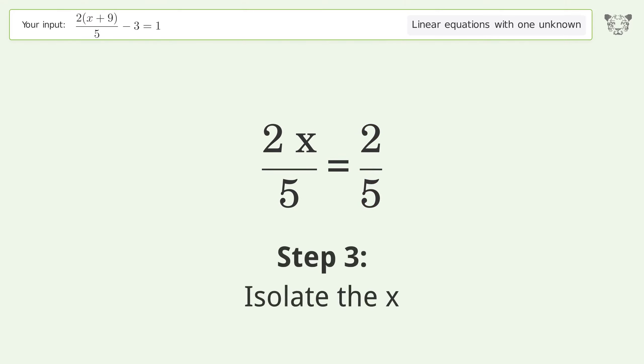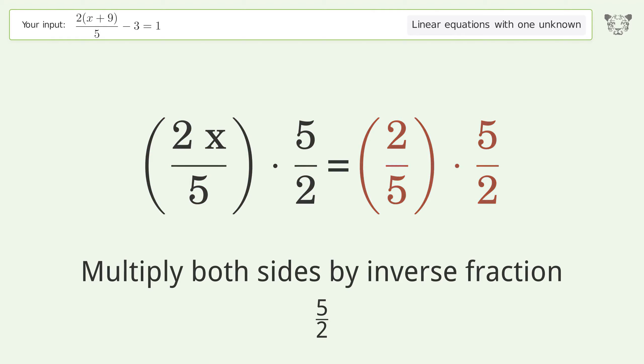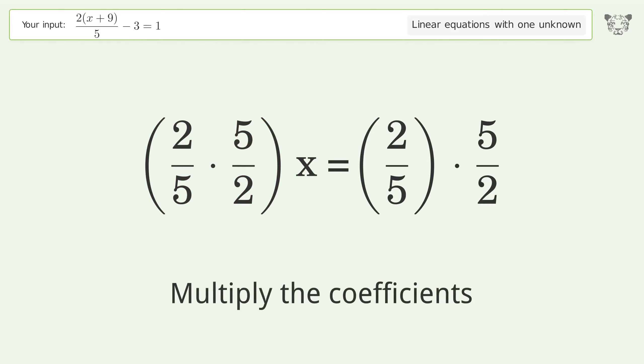Isolate the x. Multiply both sides by the inverse fraction 5 over 2. Group like terms. Multiply the coefficients.